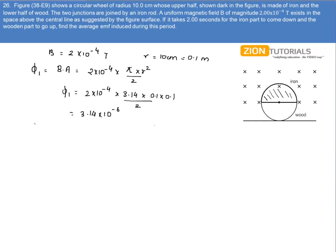Now in the second case, when the wooden part is completely in the magnetic field, this is an insulator, so the flux that will pass through it will be 0.